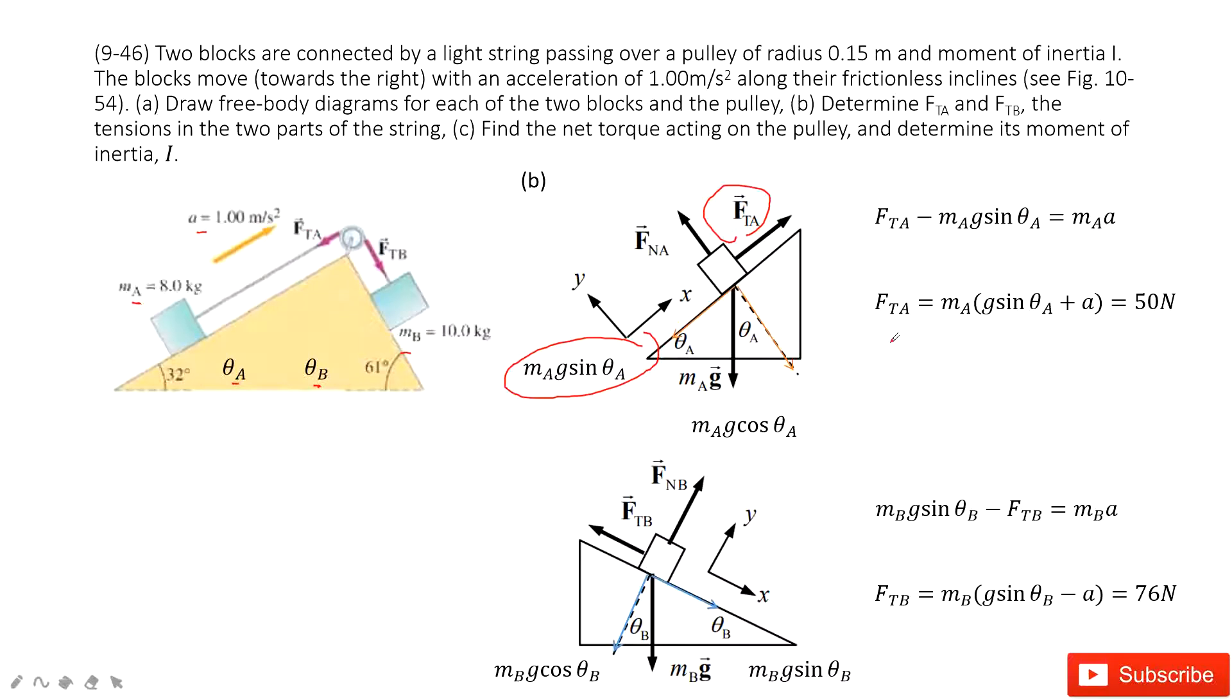In this one, then we can write the function FTA in this function. In this function, you can see mA is given, theta A is given, acceleration is given. Therefore, you can get the FTA, that is the tension for the string A, 50 newtons.